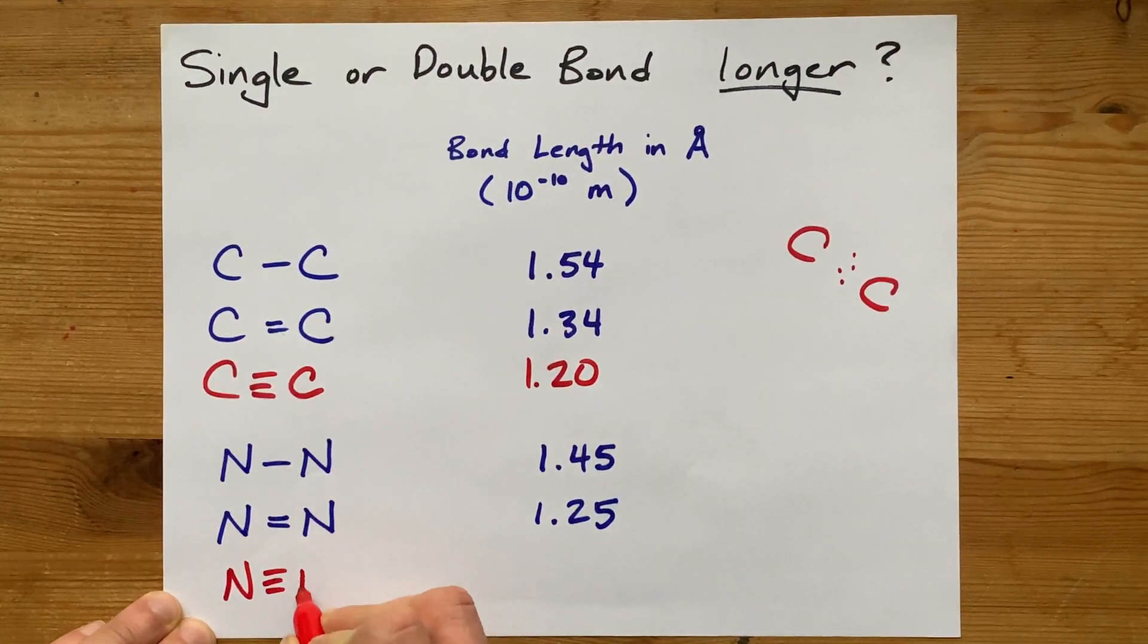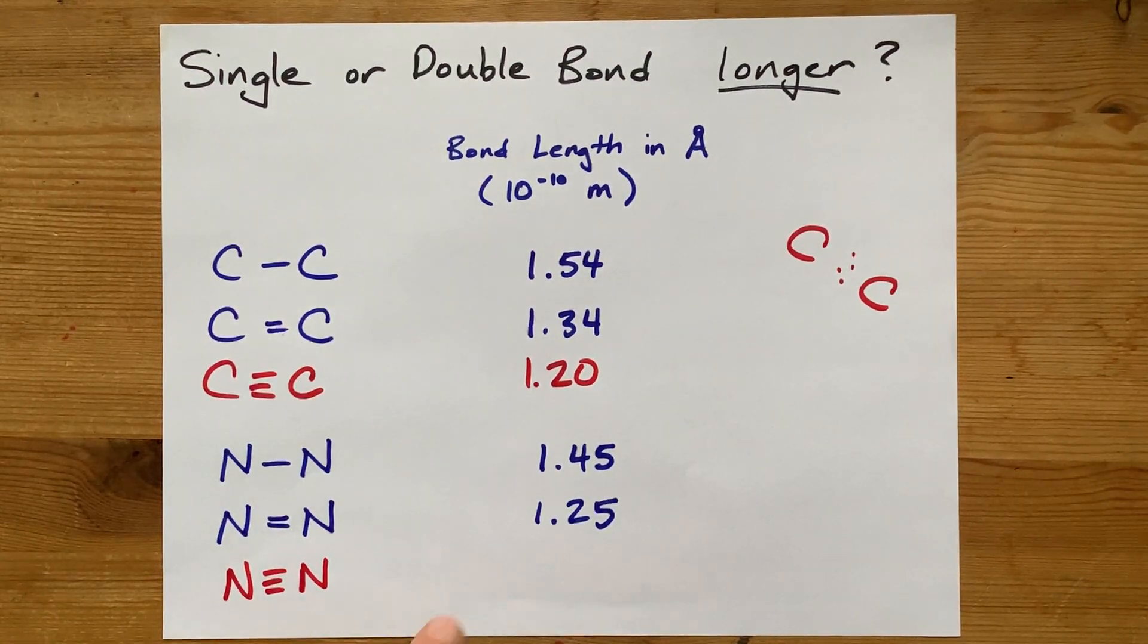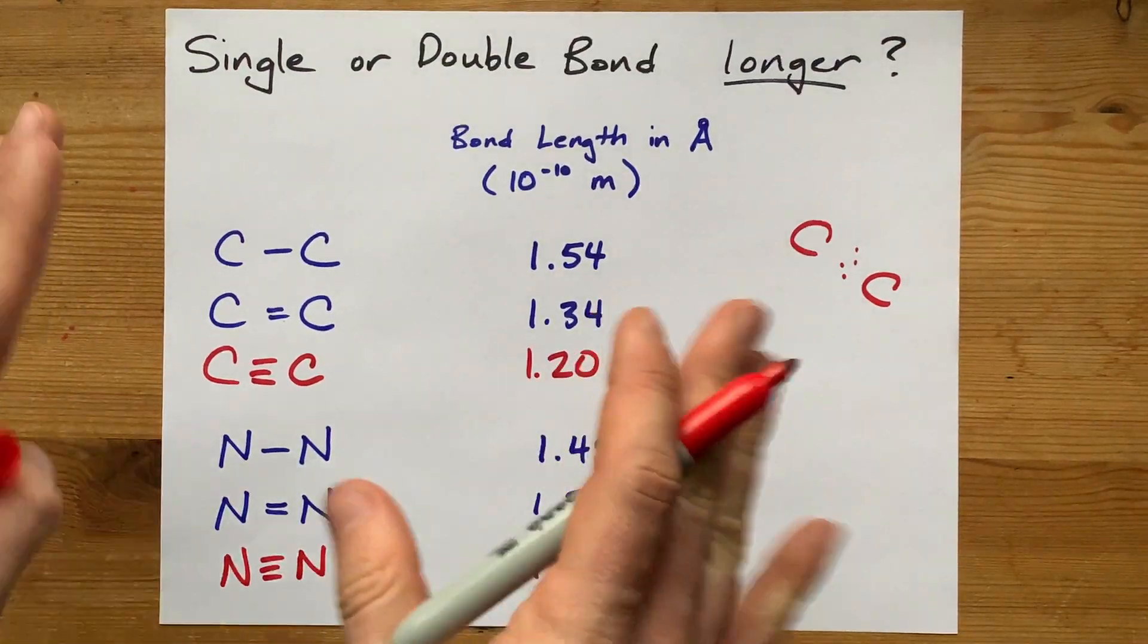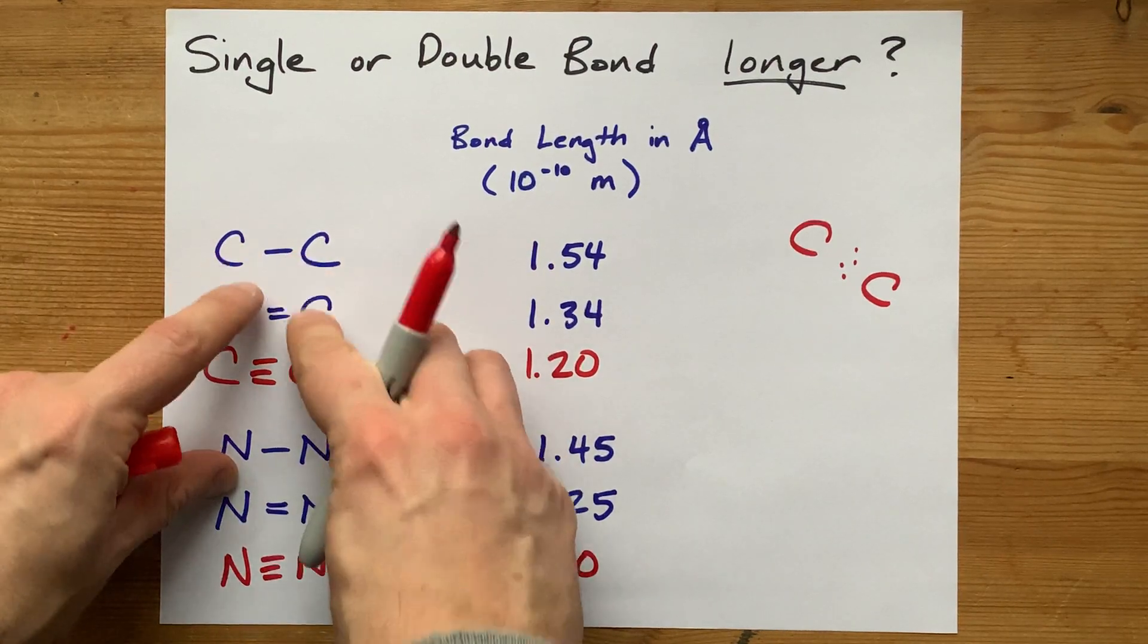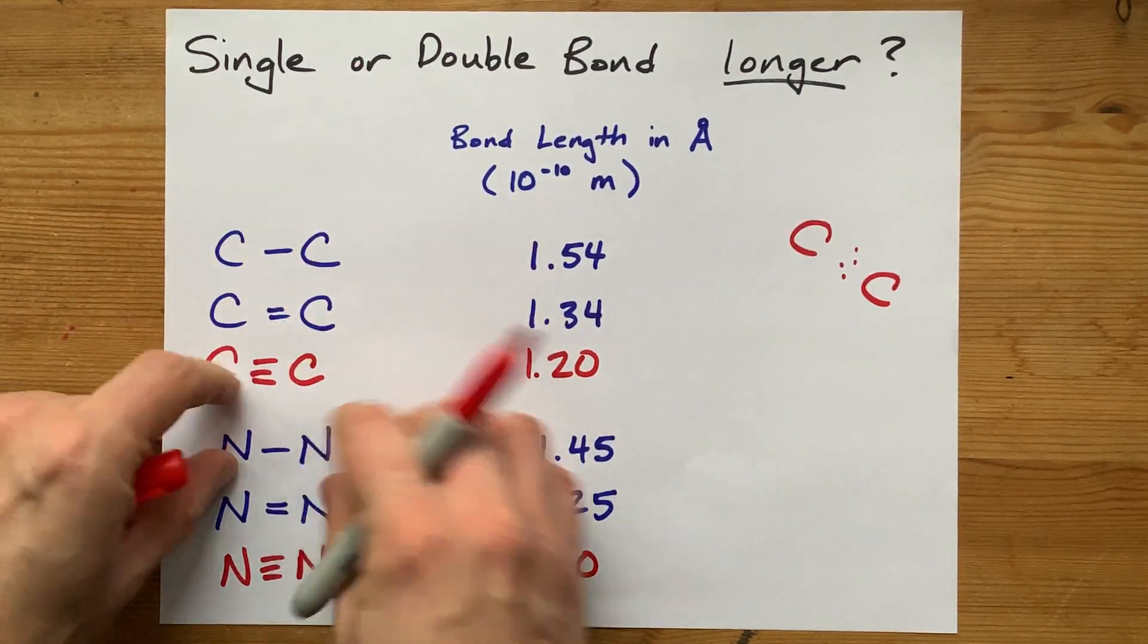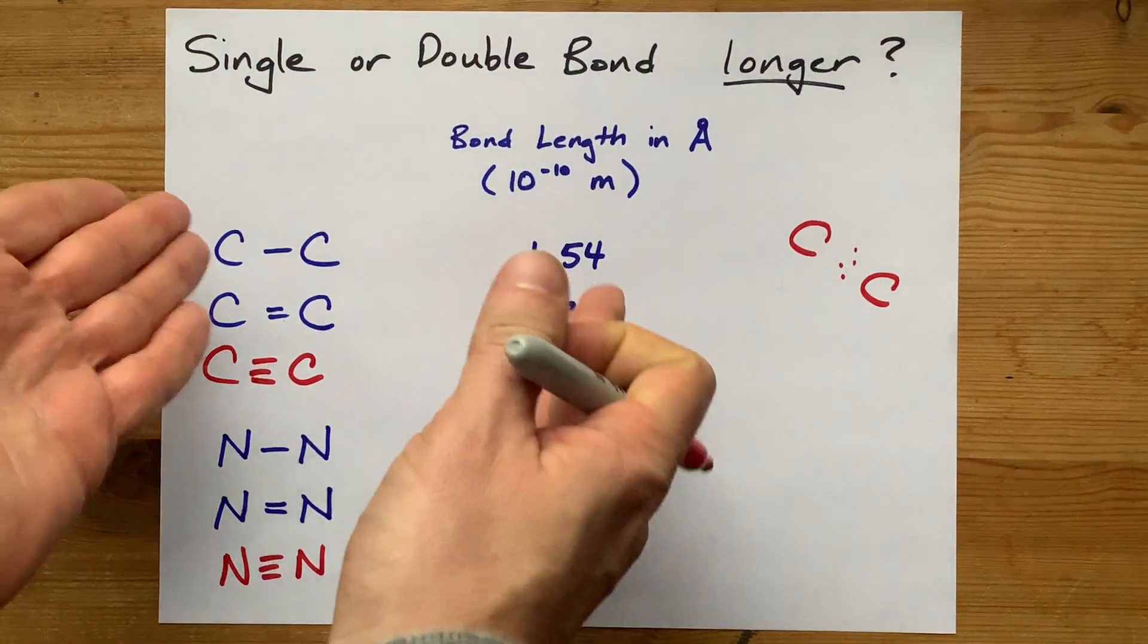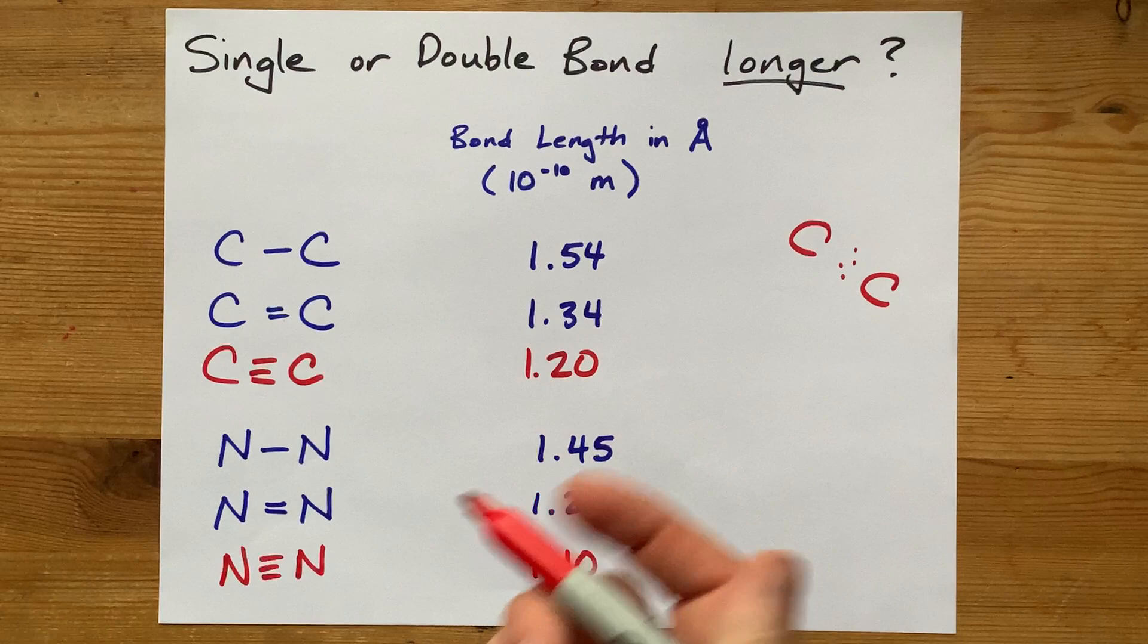Same with nitrogen. A nitrogen-nitrogen triple bond says here 1.10. I'm just trusting my chart. The point is that the higher the bond order, that's 1 versus 2 versus 3, the higher the bond order, the shorter the bond. So which one's longest? Single bonds are always longer than comparable double and triple bonds.